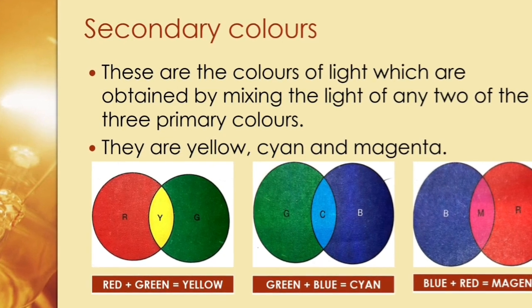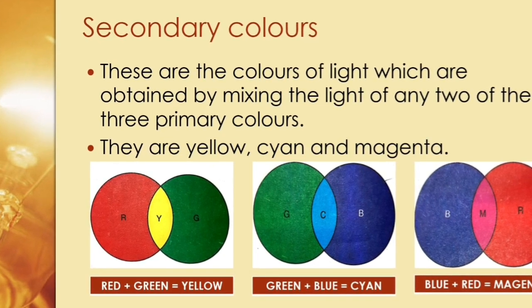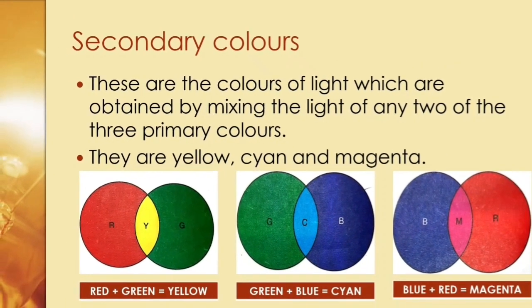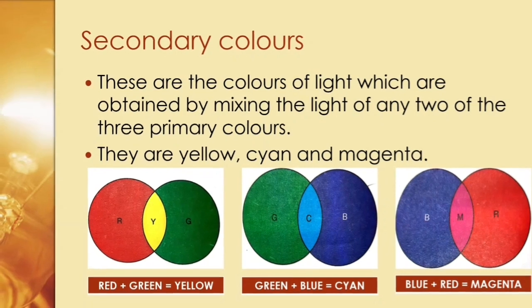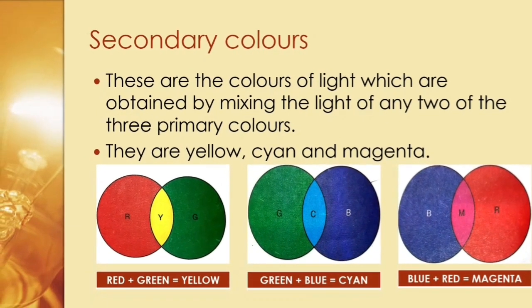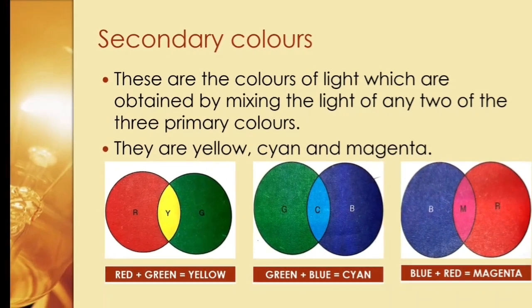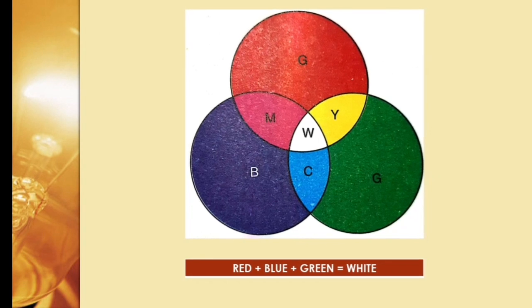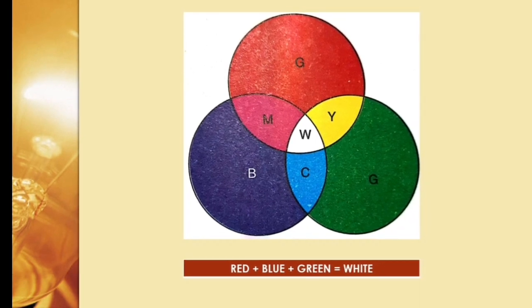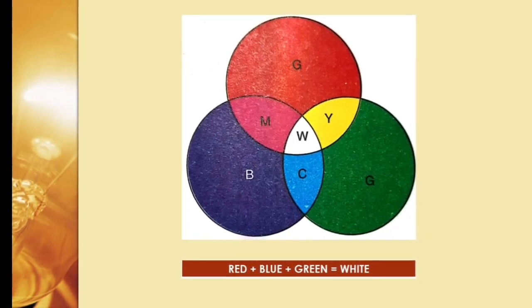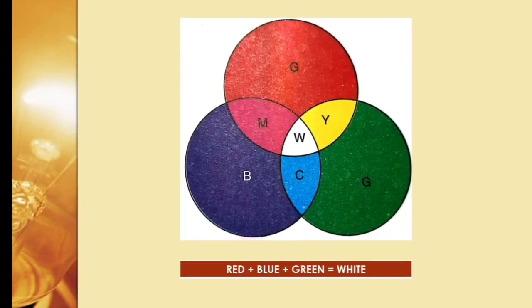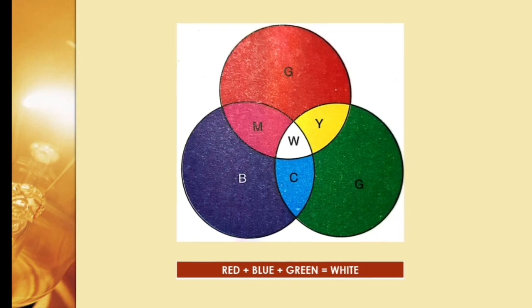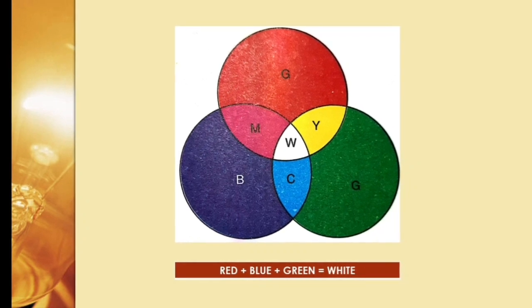Red plus green gives yellow. Green and blue gives cyan. Blue and red gives magenta. In the diagram, you can see how all three primary colors mix to give white light, and the secondary colors as well.